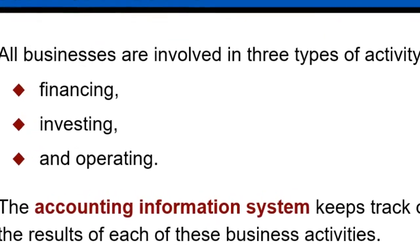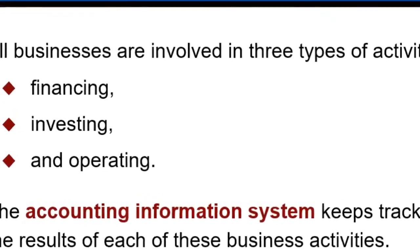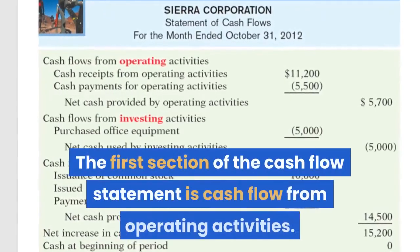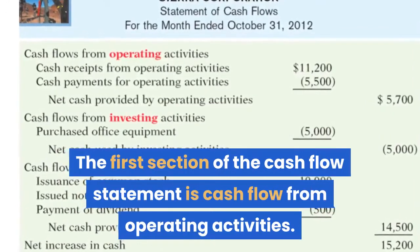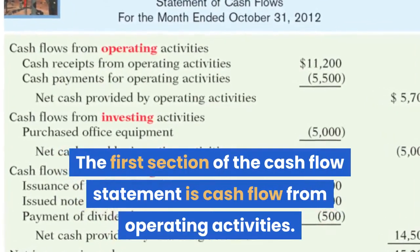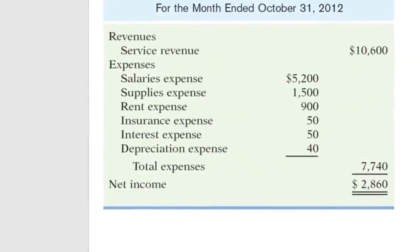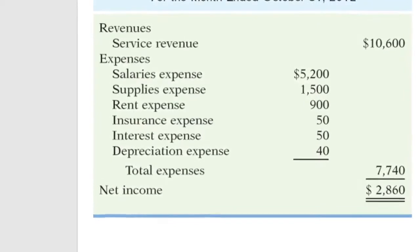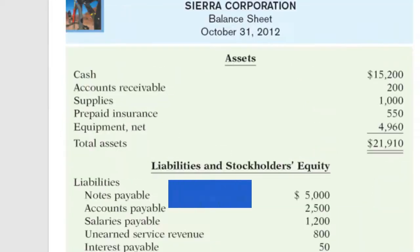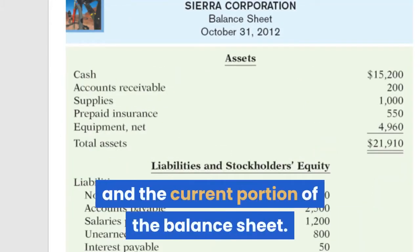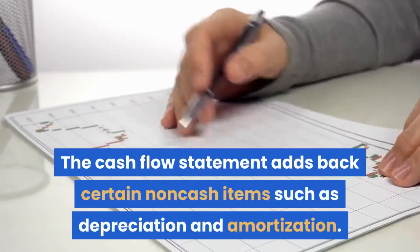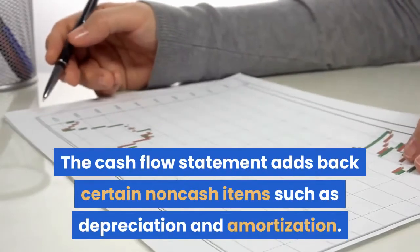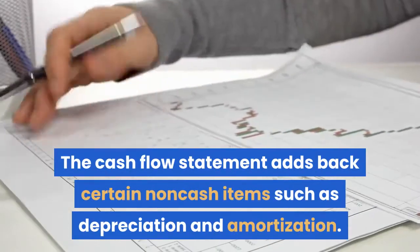Operating Business Activities. The first section of the cash flow statement is cash flow from operating activities. These activities include many items from the income statement and the current portion of the balance sheet. The cash flow statement adds back certain non-cash items such as depreciation and amortization.